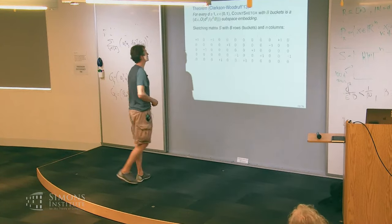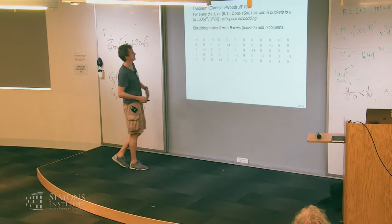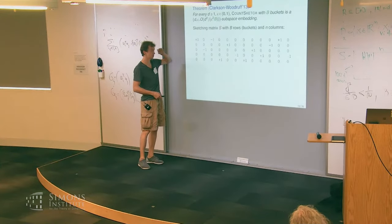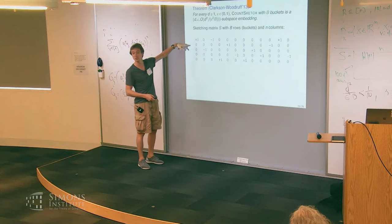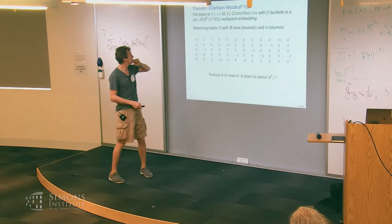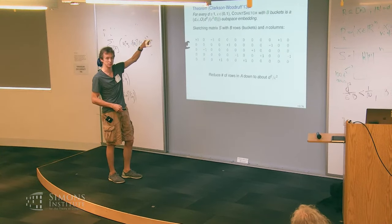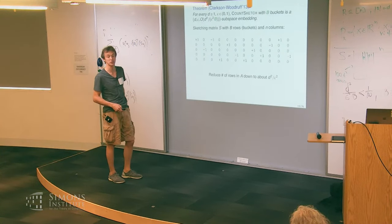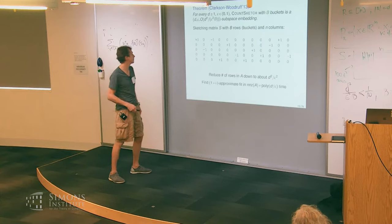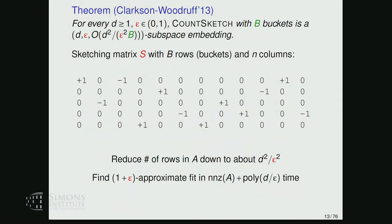As a reminder, this is the count sketch matrix itself—exactly one non-zero per every column. B is the number of rows, also known as the number of buckets. We are using this matrix to downsize the least squares regression problem, reducing the number of rows in matrix A down to a number of buckets that is quadratic in D.